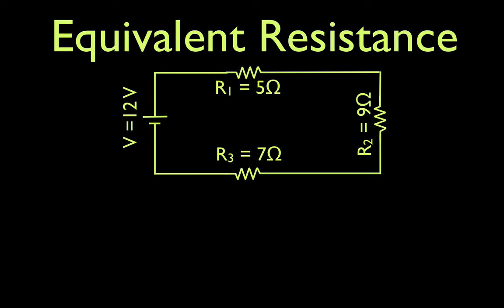This is the circuit we're going to use. We have a 12-volt battery and resistor number one, resistor number two, and resistor number three. They all come one right after the other in a closed loop. Therefore, we call those resistors in series.